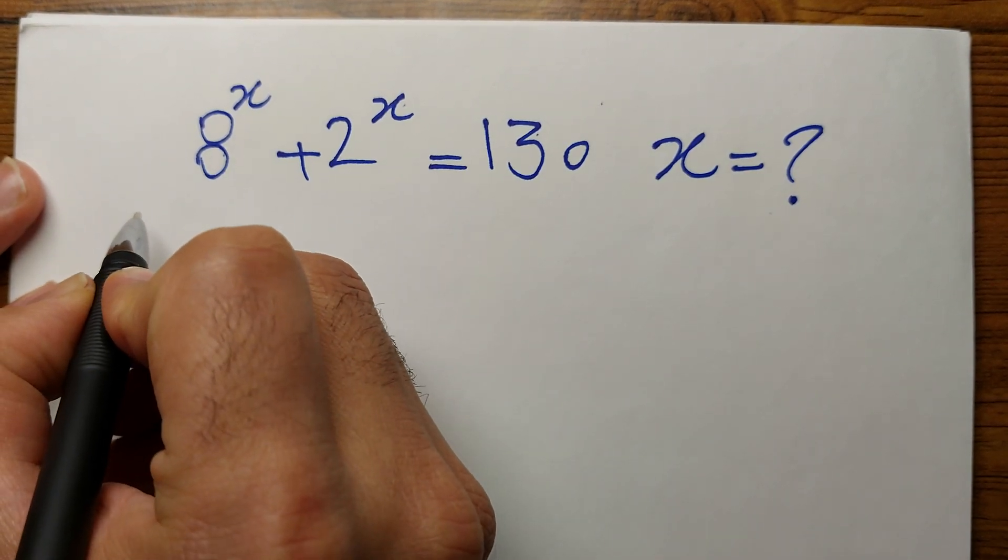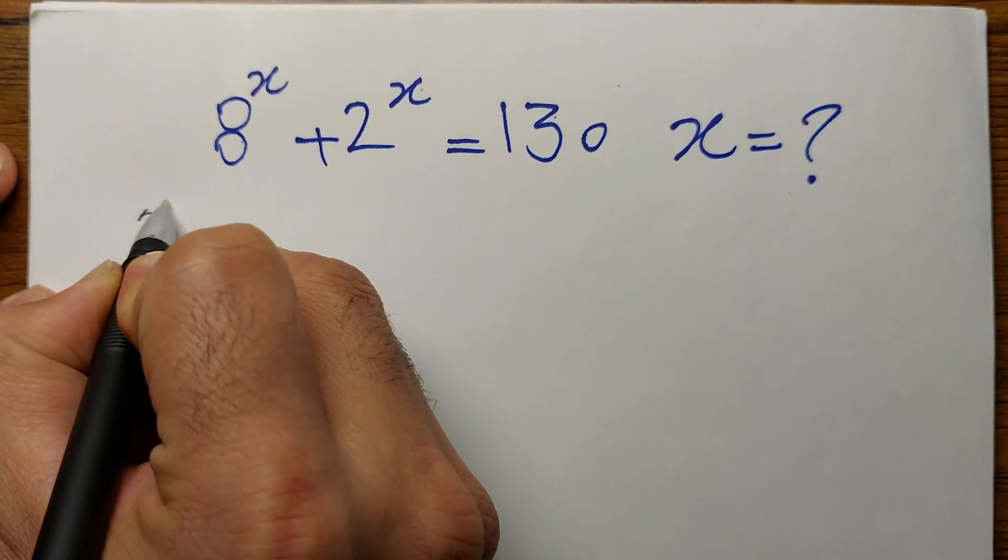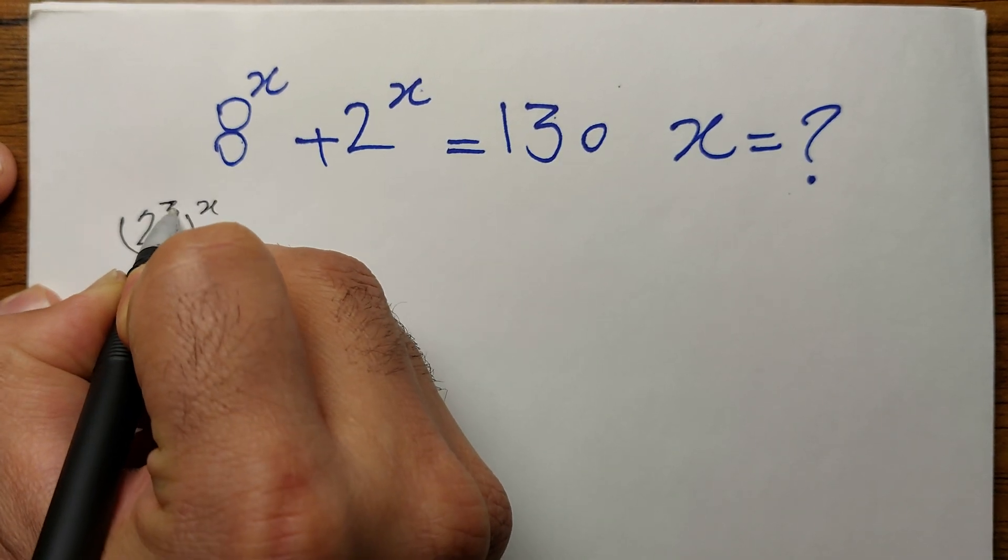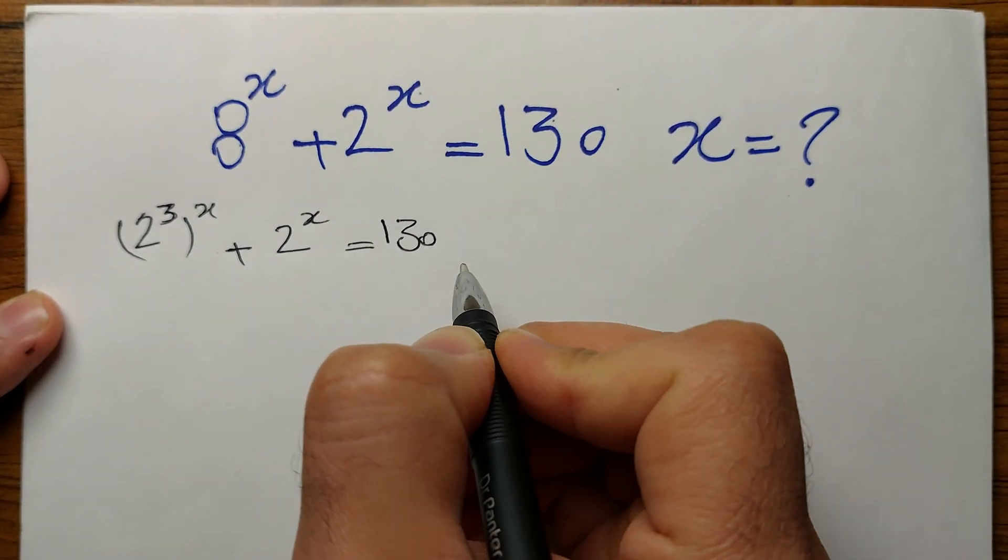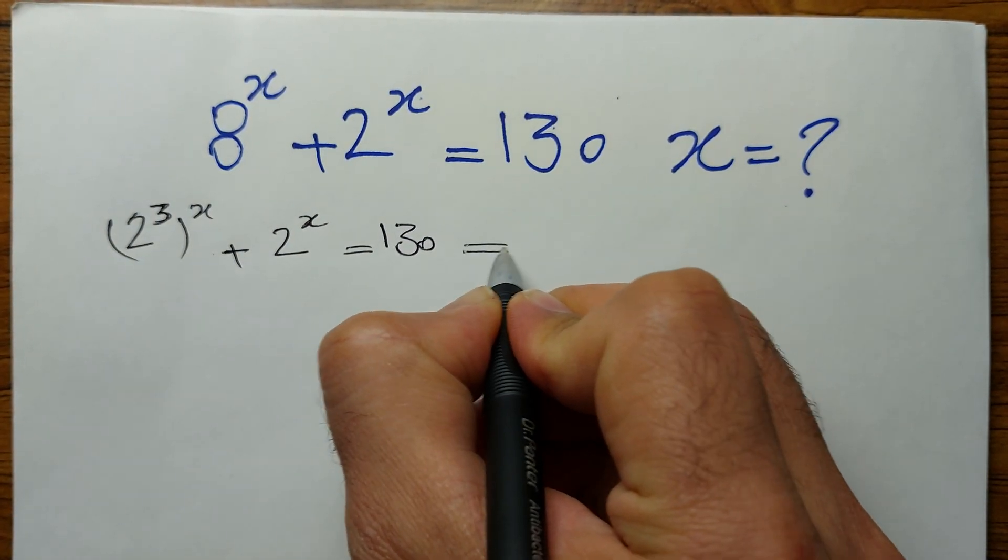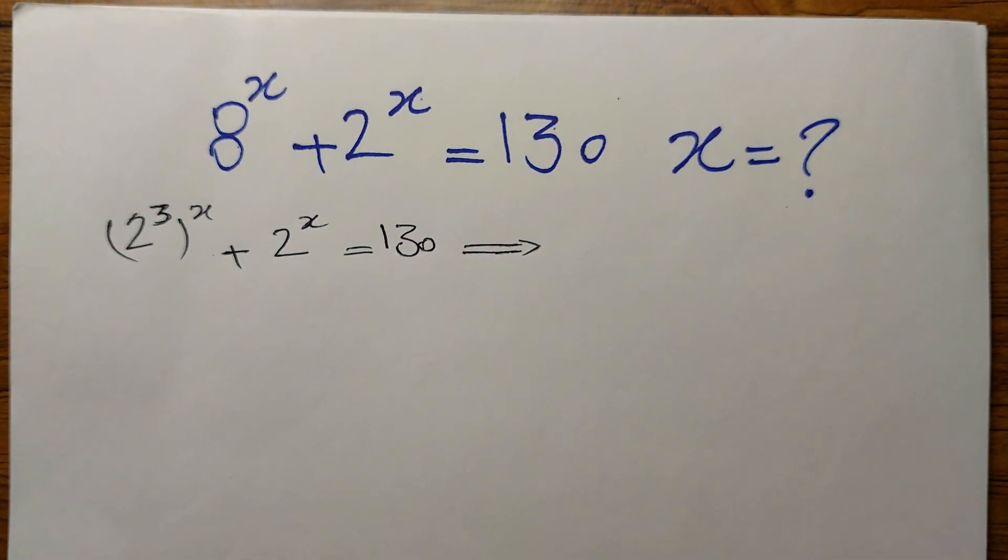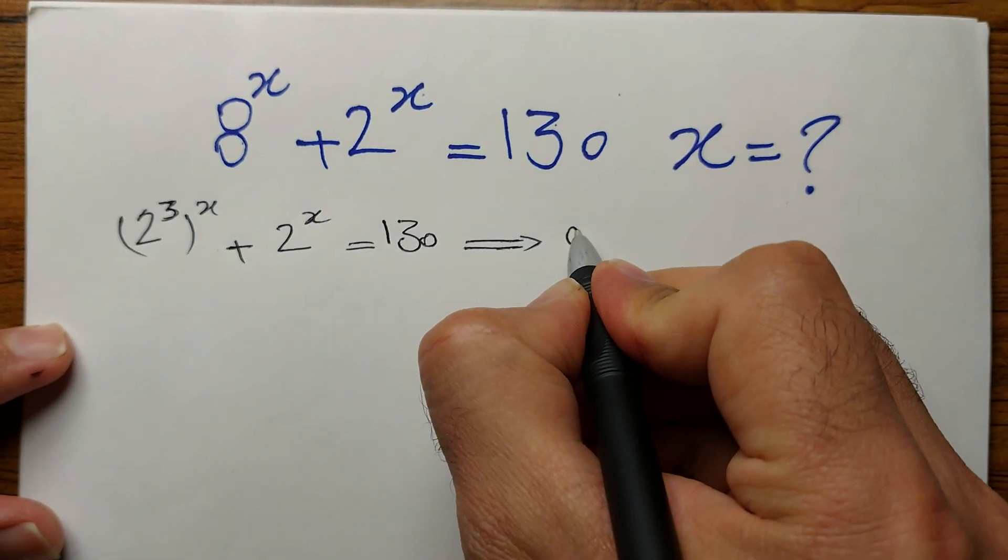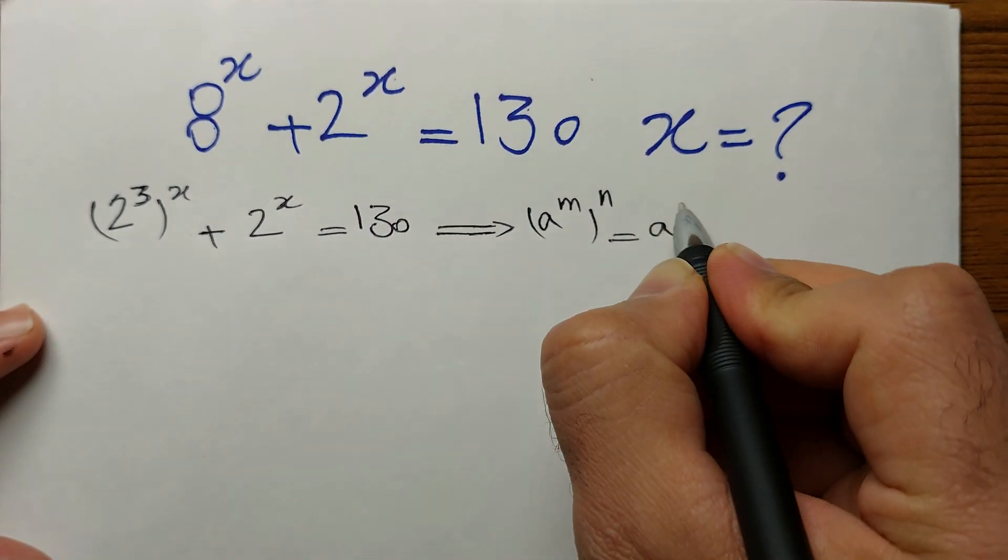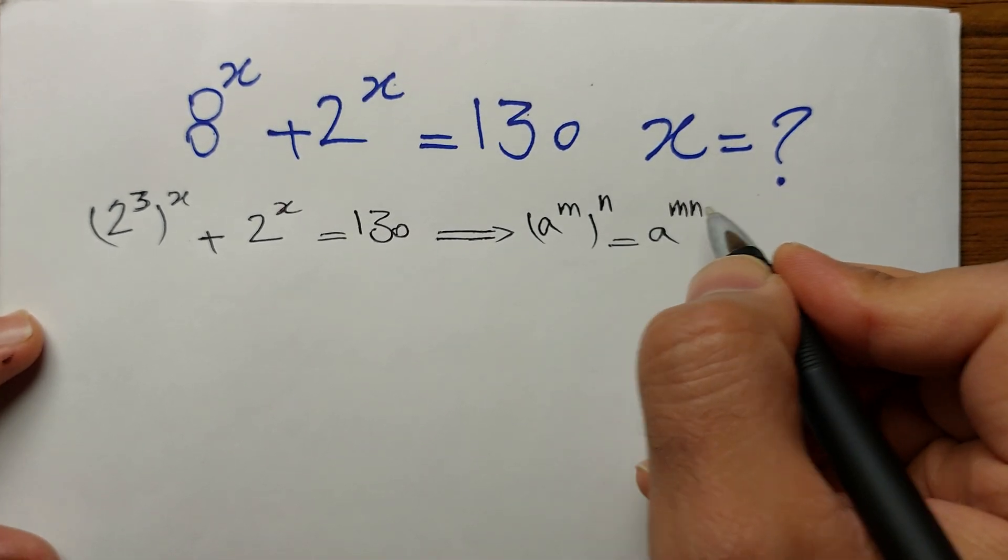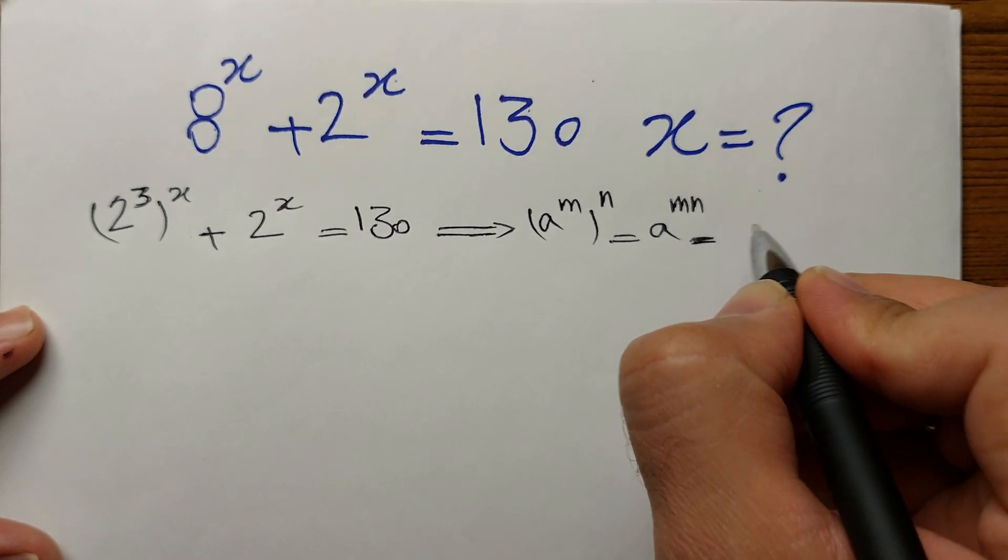The first thing here that comes to mind is we can rewrite 8 as 2 to the power of 3 to the power of x plus 2 to the power of x equals 130. I want to remind you of a very famous yet fundamental exponential relationship. Whenever we have a to the power of m, the whole bracket to the power of n, we can rewrite it as a to the power of mn.